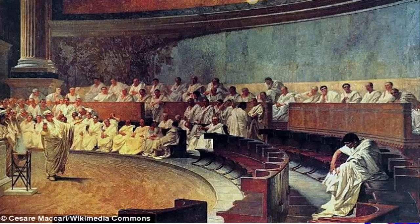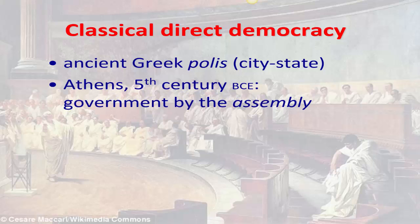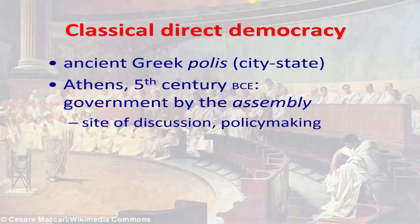When talking about ancient Greek history, we're not talking about one big country called Greece. Greek city-states, referred to as the polis, were the primary unit of government — imagine a country the size of Columbia, Missouri engaging in self-government. Athens was perhaps the most influential polis in political theory and philosophy, with great things happening in philosophy, science, literature, and theater. In the 5th century BCE, the establishment of government by the assembly was perhaps the biggest contribution to political philosophy. The assembly was Athens's legislature, and the city-state — and the assembly in particular — was the site of discussion and policy making where people came together to make decisions about Athenian government.